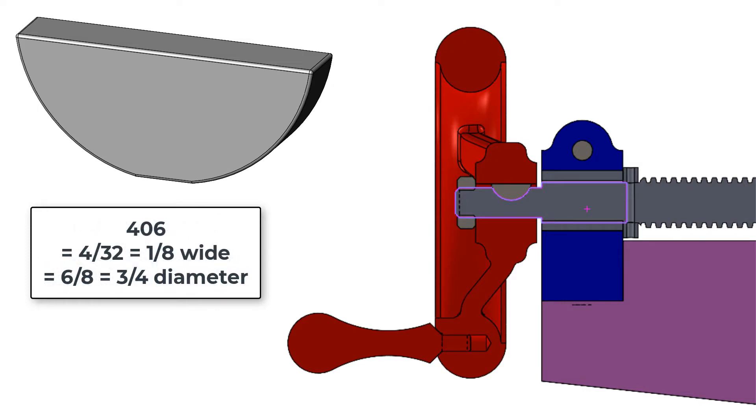For example, a 406 Woodruff key would be one-eighth of an inch wide by three-quarter diameter, and a 2428 key would be three-quarter inches wide by three-and-a-half inch diameter.